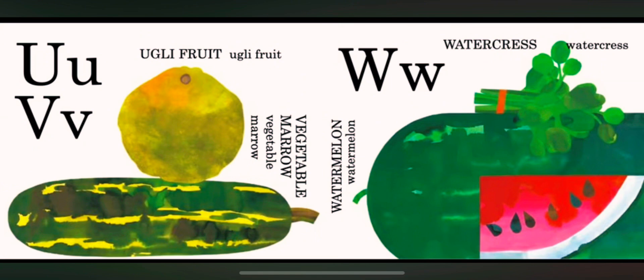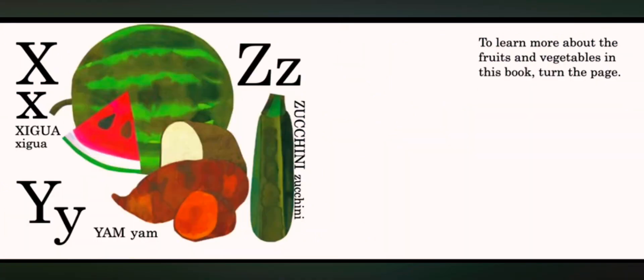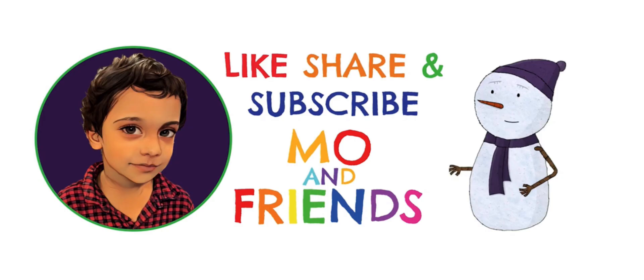W is for watermelon. W is for watercress. X is for ximenia. Y is for yam. Z is for zucchini.